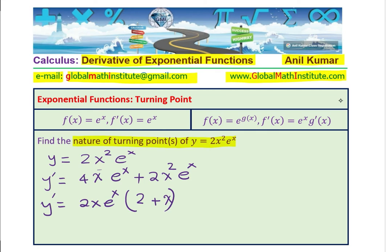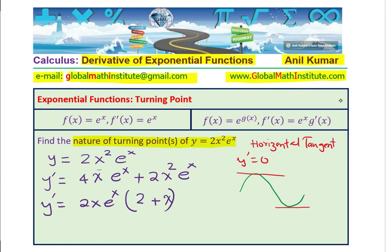Turning point means the gradient is zero. At a turning point, we have a horizontal tangent — the derivative equals zero. We equate this to zero and find the x values. We also need to determine the nature — whether each turning point is a maximum or minimum. If the gradient is positive then negative, we have a maximum; if negative then positive, we have a minimum.